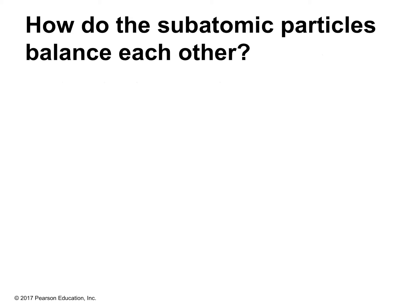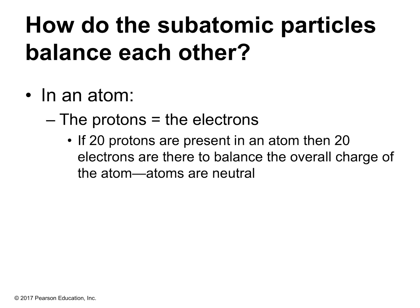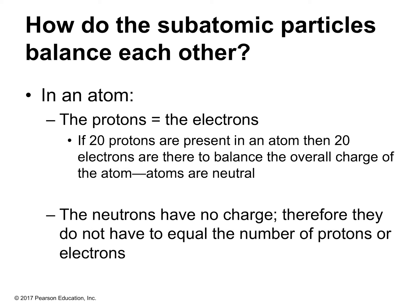How about the other subatomic particles? In an atom, the protons must equal the electrons. An atom is neutral, so if we have a certain number of positive charges, we have to have that same number of negative charges. For example, if we have 20 protons in an atom, then we have to have 20 electrons to balance them out. The neutrons have no charge, so they don't have to equal anything — they kind of do their own thing and we find them a different way.